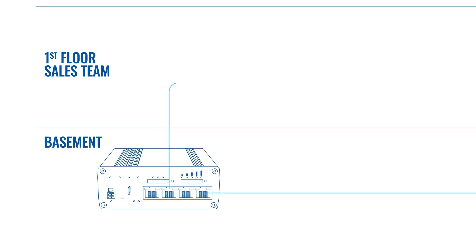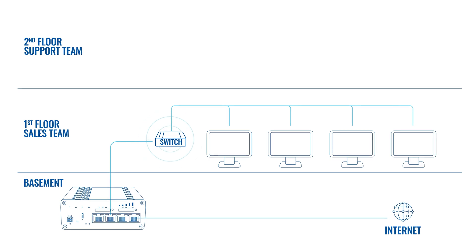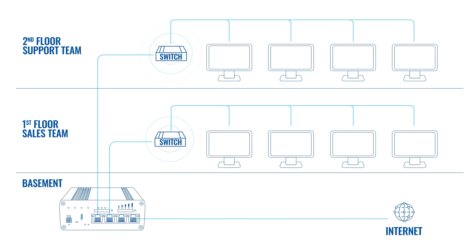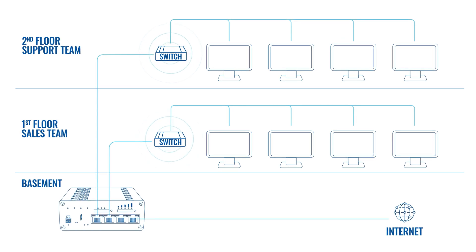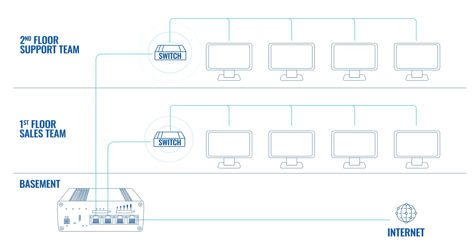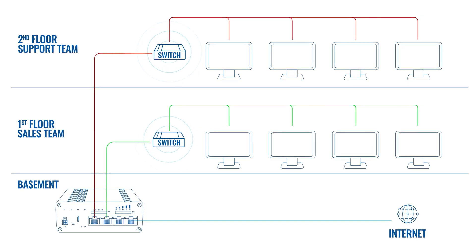For example, imagine you have a two-story building. On one floor, you have your sales team. On the other, your support team. Both teams have their internal systems with private data that shouldn't be available to the other team. To avoid that, you can create two separate networks for both teams via Ethernet ports, making each team's data unreachable to the other.